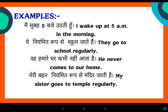'वह हमारे घर कभी नहीं आता है.' He is used for male. 'कभी नहीं' means never. The action is 'आना' — come. Since the subject is 'he', we add S to the verb: comes. So: he never comes to our home. Similarly, 'मेरी बहन नियमित रूप से मंदर जाती है' — my sister goes to temple regularly.